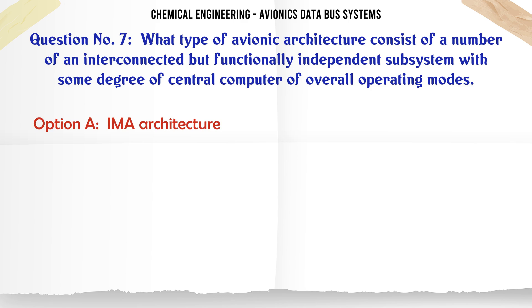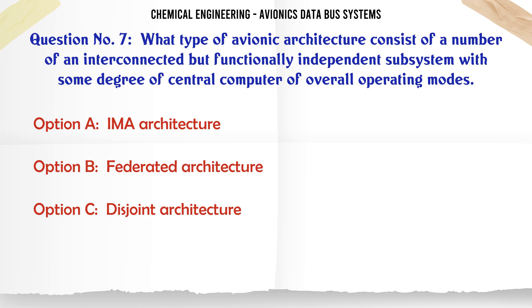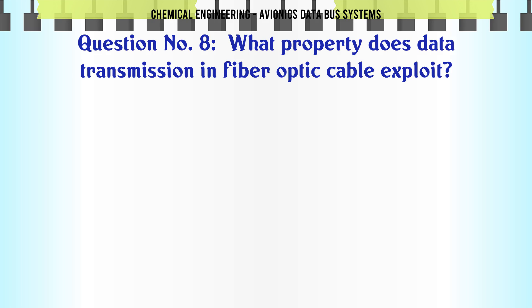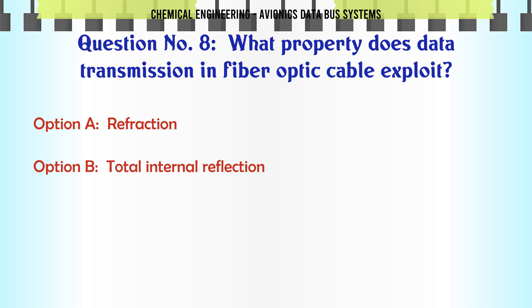What type of avionic architecture consists of a number of interconnected but functionally independent subsystems with some degree of central computer control of overall operating modes? A. IMA architecture, B. Federated architecture, C. Disjoint architecture, D. Distributed architecture. The correct answer is Federated architecture.